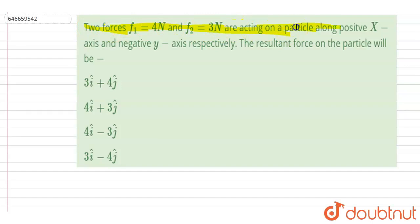f2 are acting on a particle along positive x-axis and negative y-axis respectively. The resultant force on the particle will be... So if you see, the direction of forces are already given. If I write down the x-axis and y-axis like